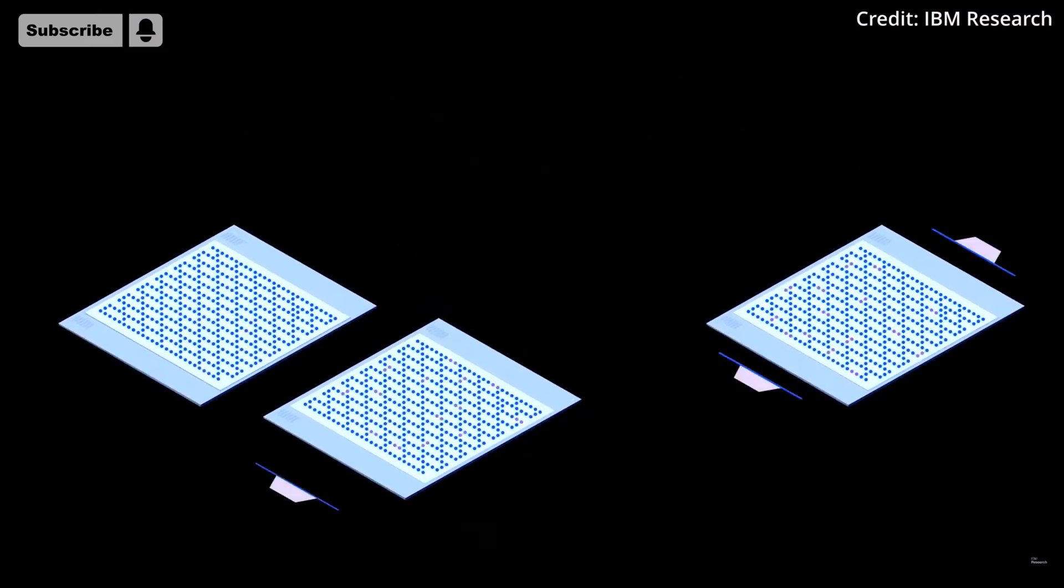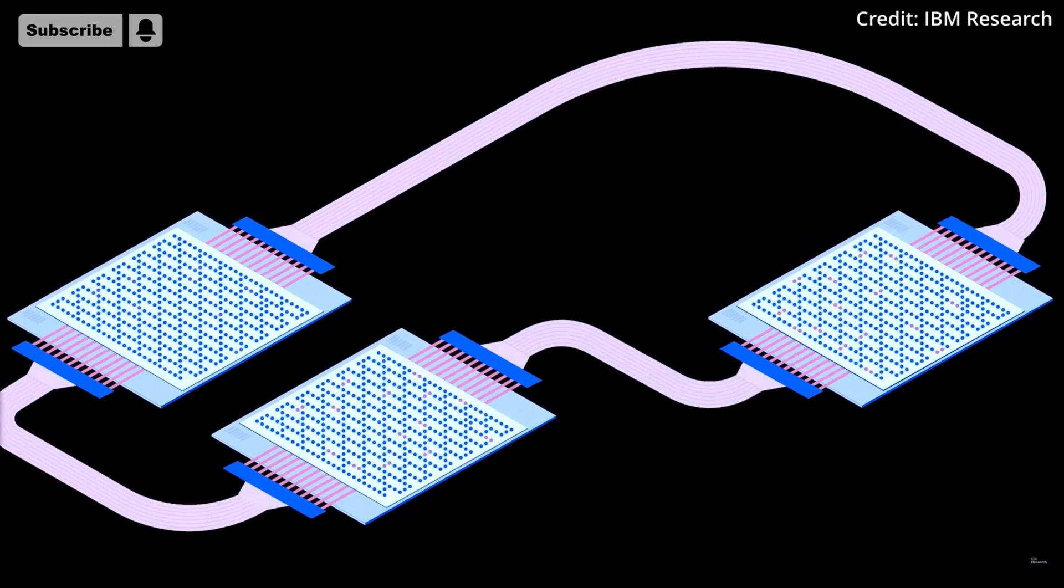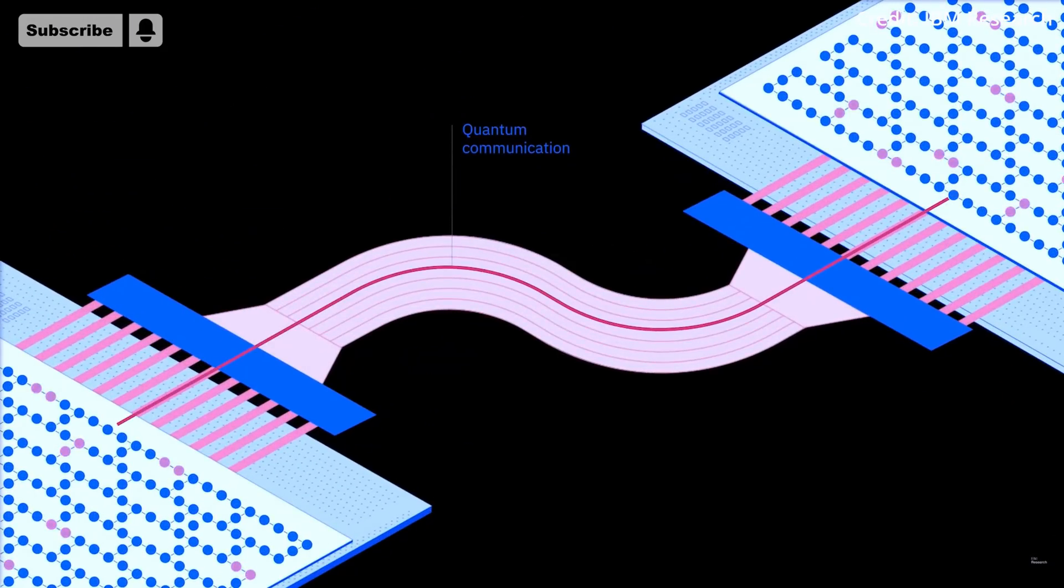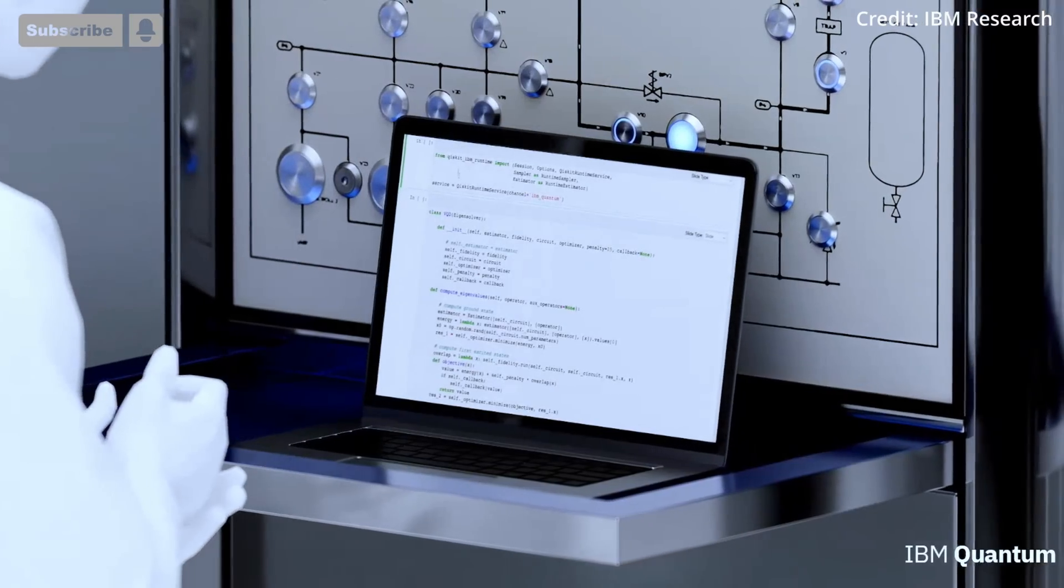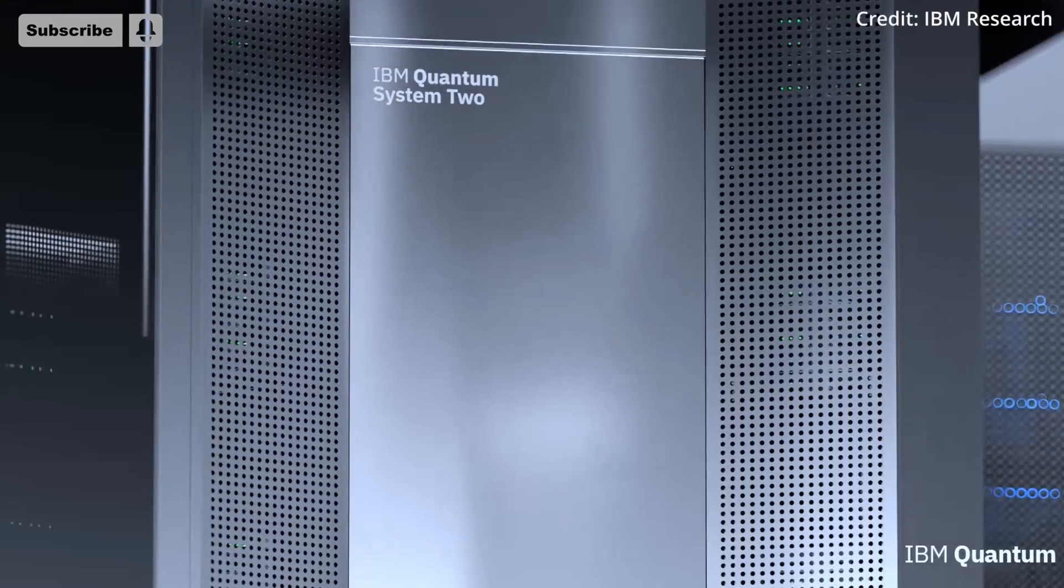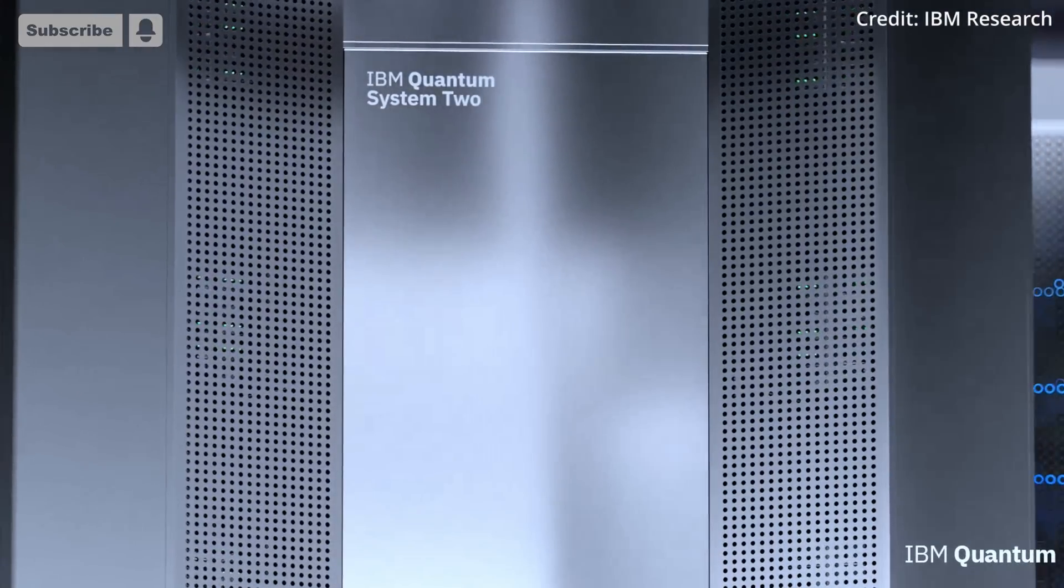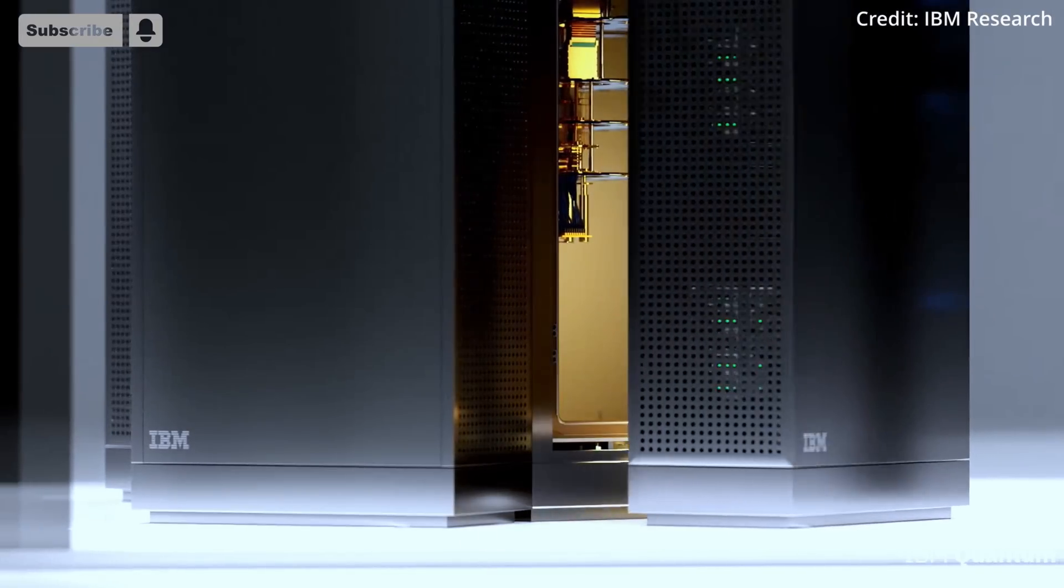IBM showed an elegant and functional quantum computer at CES 2019. Last year, it offered a sneak preview of the design for the next-gen IBM Quantum System 2, the machine that will use its quantum processors. Now, the company has revealed more details.